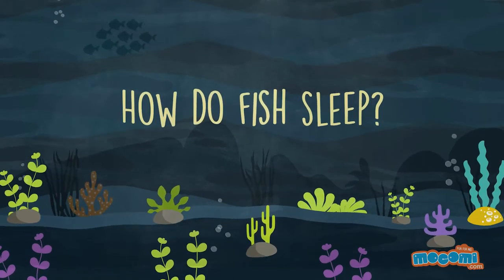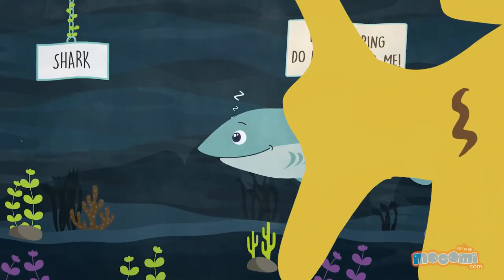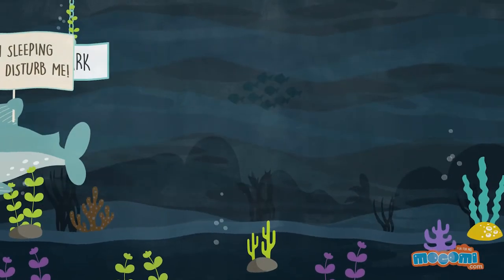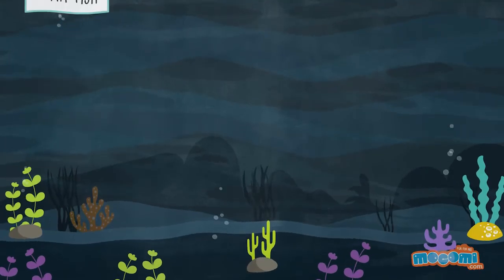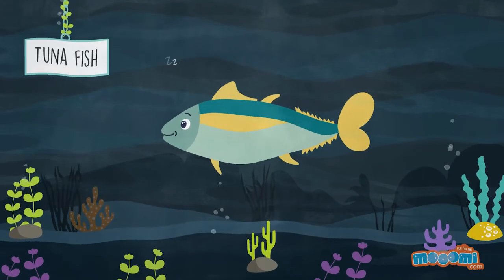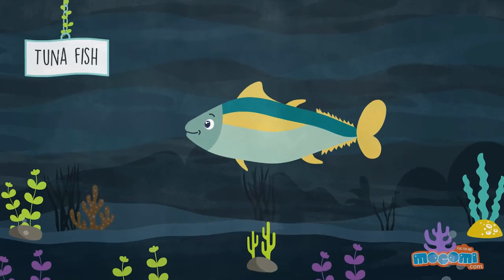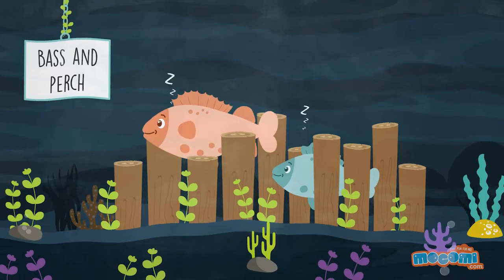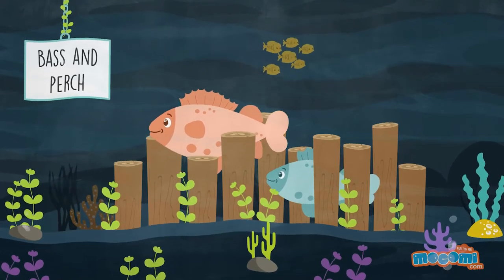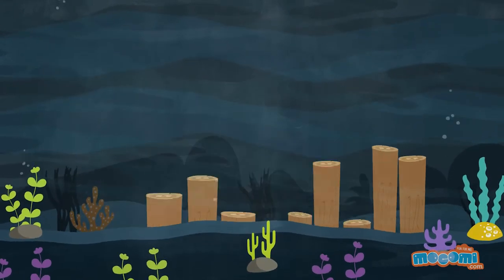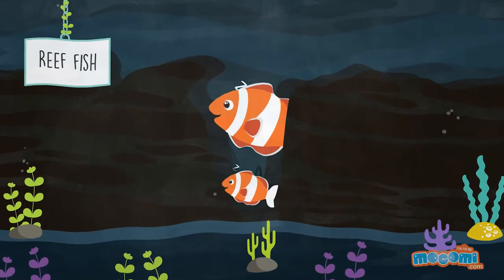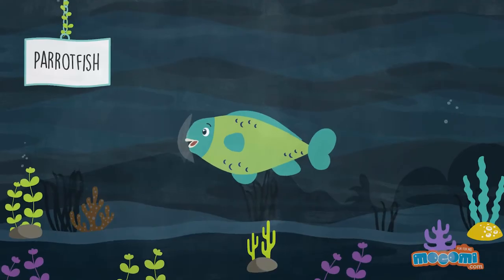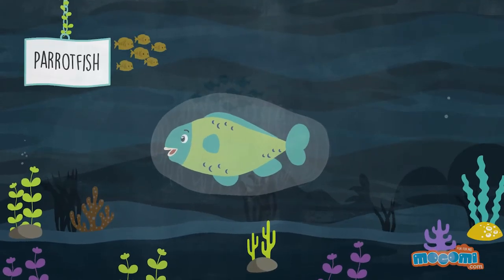How do fish sleep? Some fish like the shark keep swimming in their sleep. Tuna fish rest motionless at night suspended in the water. Bass or perch will sleep under or on top of logs. Reef fish seek refuge in crevices. Parrot fish build a cocoon of mucus in which to sleep.